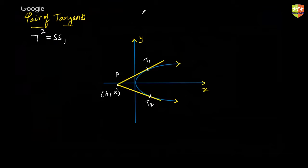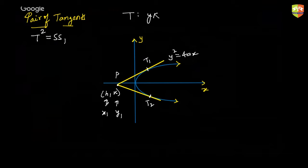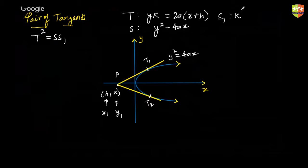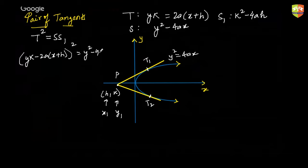For the parabola y² = 4ax, T will be yy₁ — where y₁ = k — equal to 2a(x + x₁). S will be y² − 4ax, and S₁ will be k² − 4ah. So you can write down the combined pair of tangents equation as T² = SS₁.